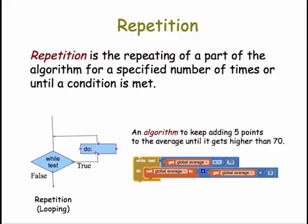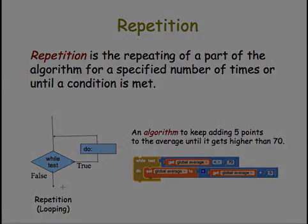While it is true, we will do the statement or statements inside the do slot. And then we'll loop back and test the condition again. And as long as it's true, we will continue going through this loop. When it becomes false, we will exit the loop and continue on with our algorithm.